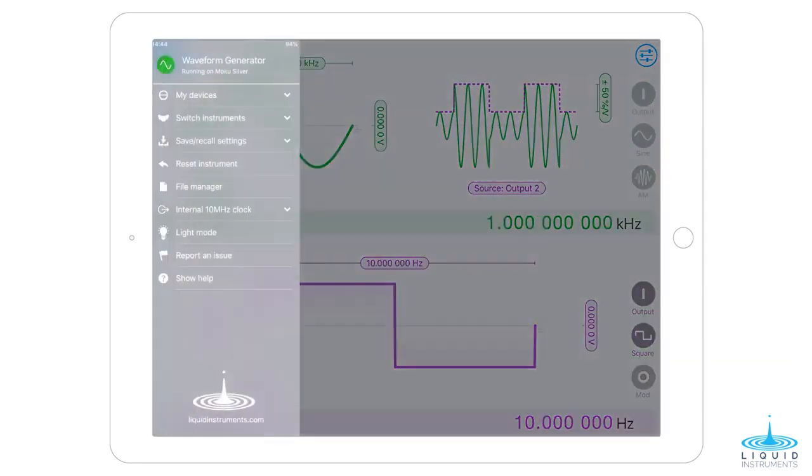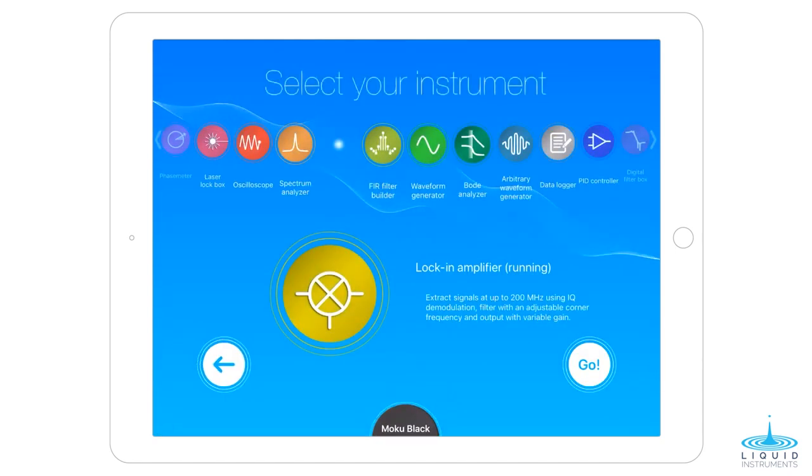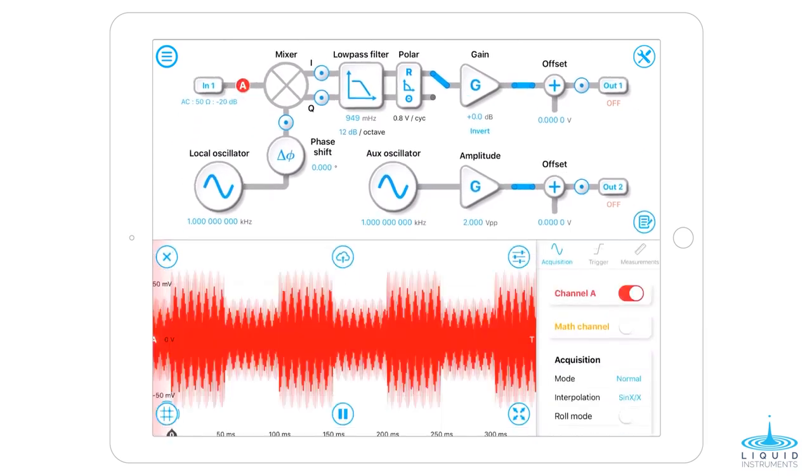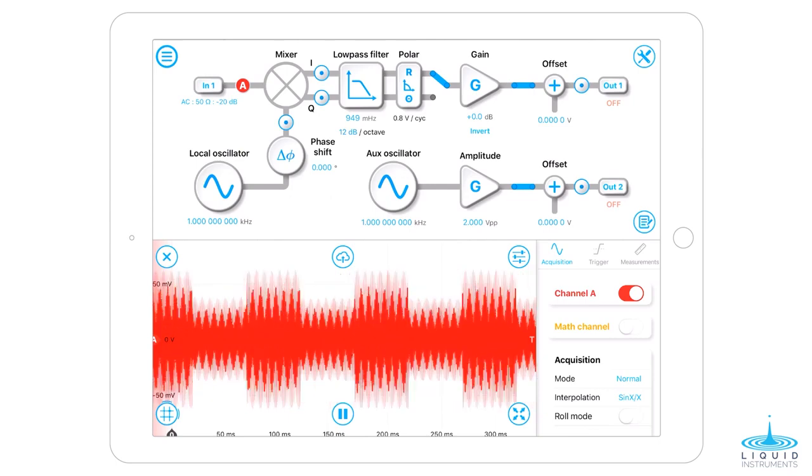Turn on AM modulation and modulate the signal with a 10 Hz square wave. Then, we connect to the black Moku and launch the lock-in amplifier instrument. Turning on the input probe, we can observe the 1 kHz signal modulated by the 10 kHz signal. Next, turn on the output probe.